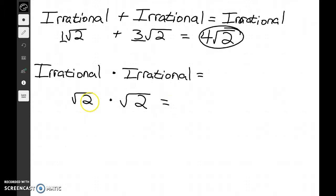But when I take 2 times 2, I get the square root of 4. The square root of 4 is equal to 2. So here my answer actually ends up being rational.